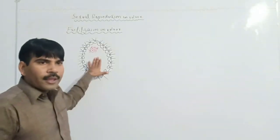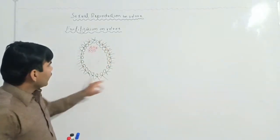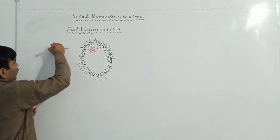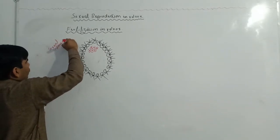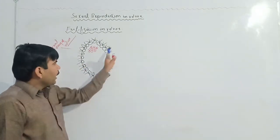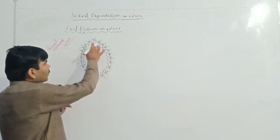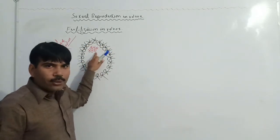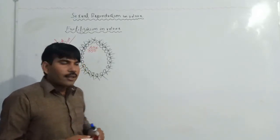In the sexual colonies of Volvox, asexual colonies are absent. This is a sexual colony of Volvox. The cells present on the peripheral region have structures known as flagella. The structures shown in red are the antherozytes, which were produced in a process studied in the last lecture.